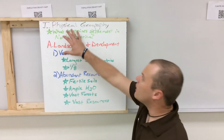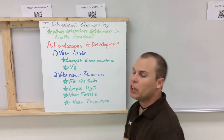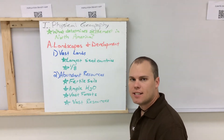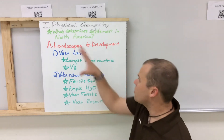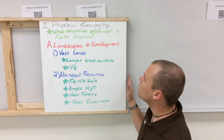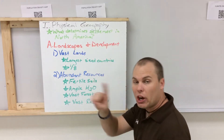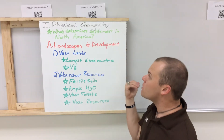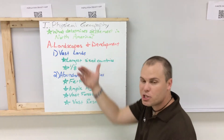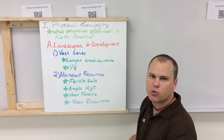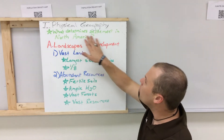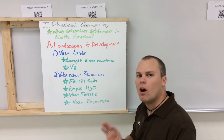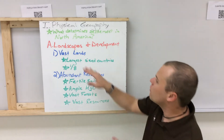In this unit we're going to be looking at the physical geography of North America, which includes the United States and Canada. The central question, which will carry over to the next section as well, is: what determines settlement in North America? What are all the things that go along with why people live where they live in North America?